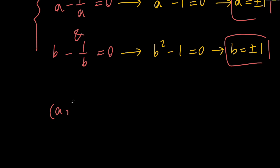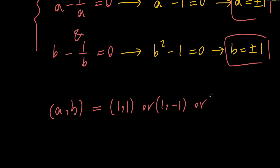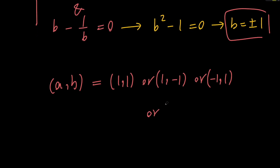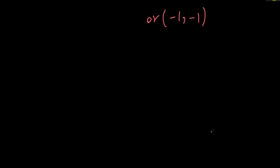The four solution pairs (a, b) are: (1, 1), (1, −1), (−1, 1), and (−1, −1). Great, this brings us to the end of this video. Thank you for watching. If you enjoyed it, hit the like button and subscribe for more. I'll see you later.